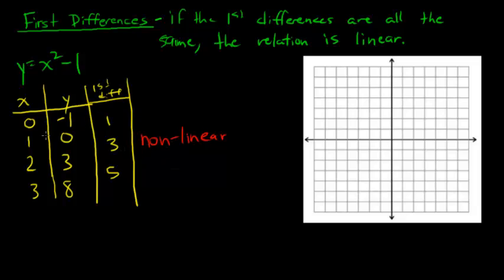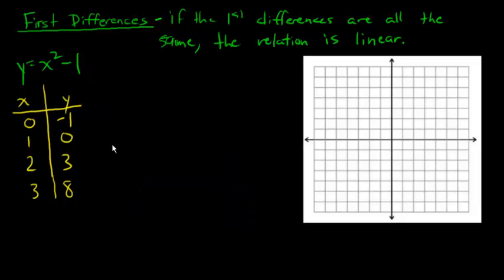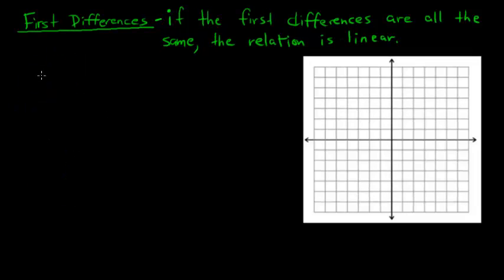And just to prove it, let's graph it. Plotting (0, -1), (1, 0), (2, 3), and (3, 8) — you can already tell this is not a straight line; it's going to be more of a curve. So that is non-linear, and the graph proves it. But using first differences, we didn't even have to actually draw the graph. This is a shortcut to save time. We just create a table of values, and if the first differences are all the same, you know it's linear.